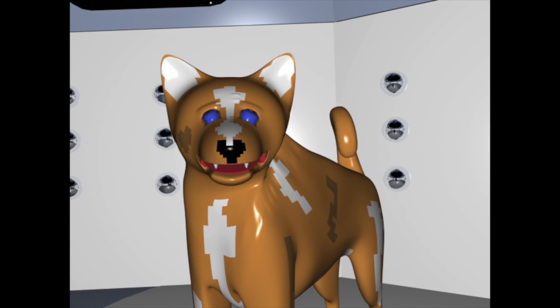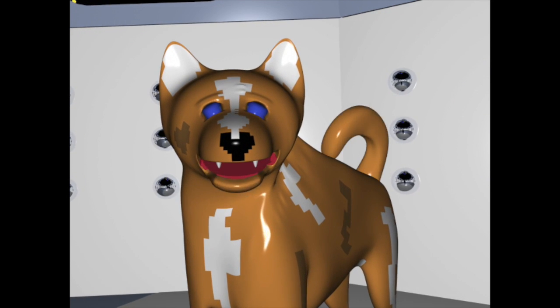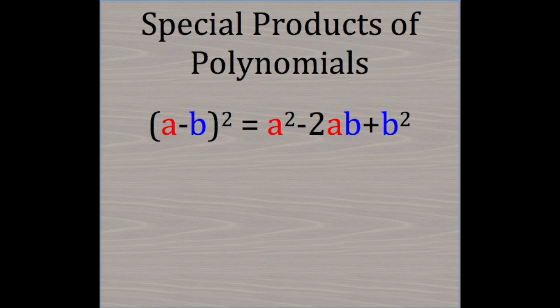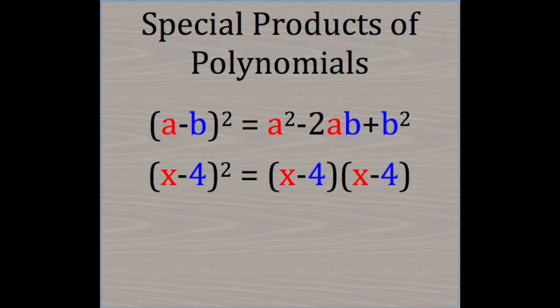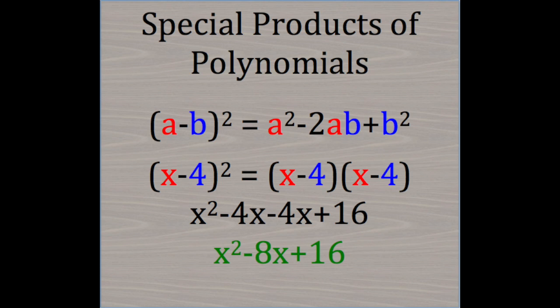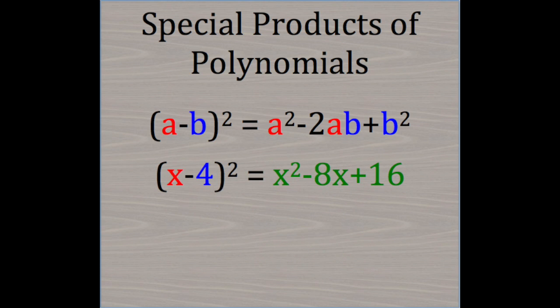Lastly, we have the third special product of polynomials. It looks similar to the second special product, except this is (a-b) multiplied by itself. And again, we could use an example and multiply it out, or we could use the third special pattern and save ourselves some work.